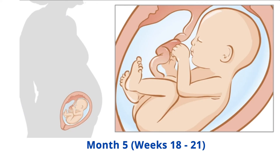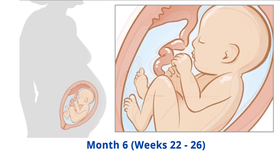Month 5, weeks 18-21: by week 18, your baby starts to suck and swallow. Their tooth buds have appeared and their fingers and toes are well defined. They now get their nourishment from the placenta. Their skin is thin and there is little underlying fat.